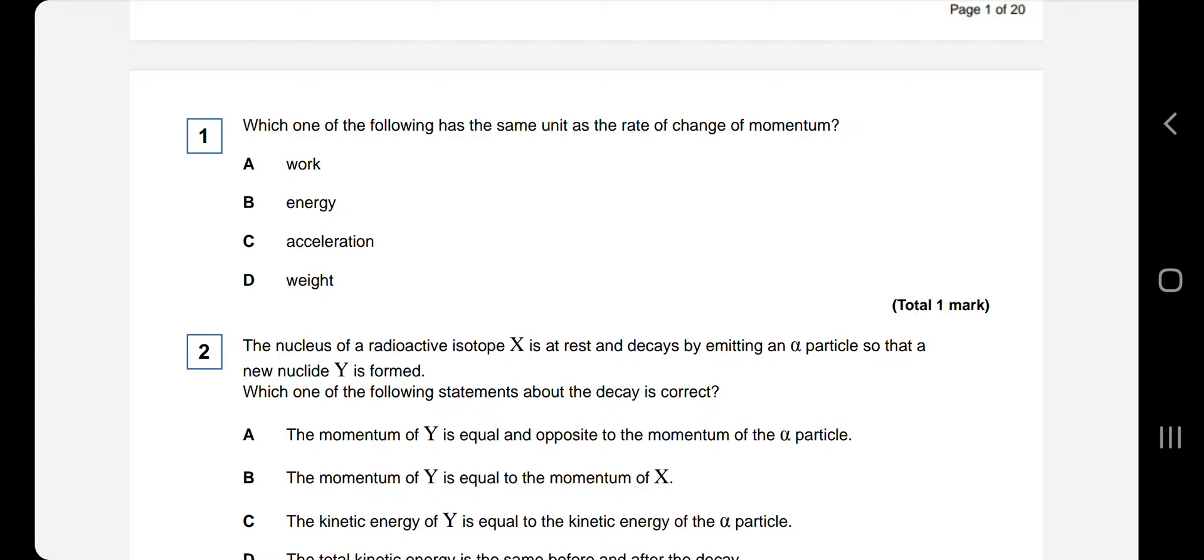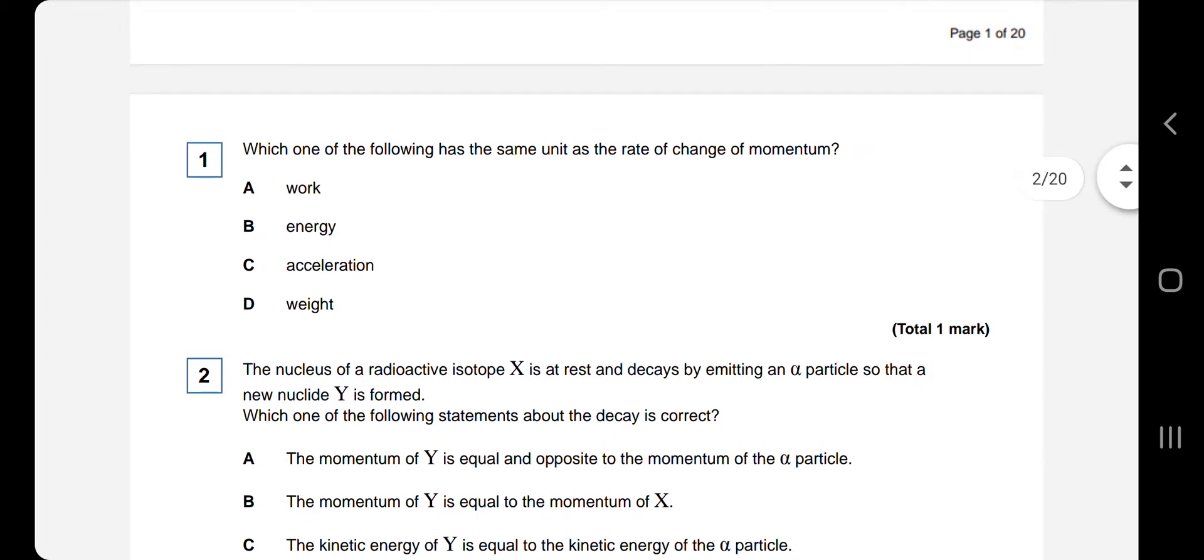So each one of the following has the same unit as the rate of change in momentum. So the rate of change in momentum, first of all, rate of means divide by time, and of momentum, so momentum divided by time. And the rate of change in momentum divided by time is force, it's an equation that you should know. So force is change in momentum divided by change in time, and obviously force is measured in newtons. We can just do a quick check. So work is joules, energy is joules, acceleration is meters per second squared, weight is measured in newtons, so the answer would be D.